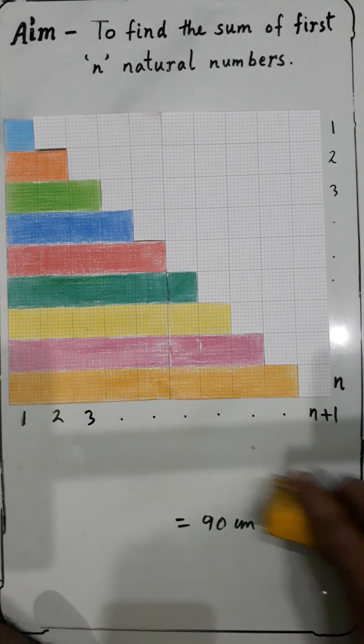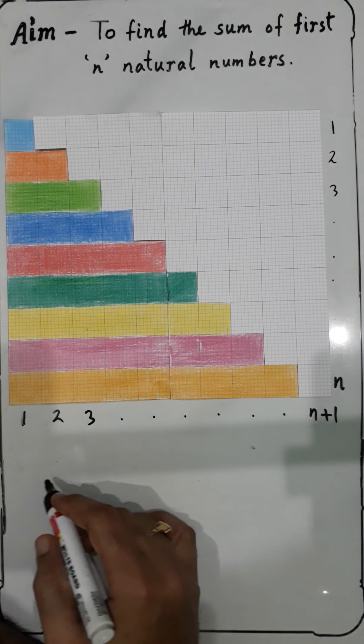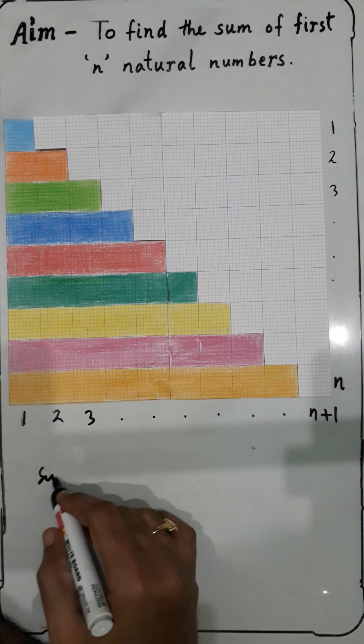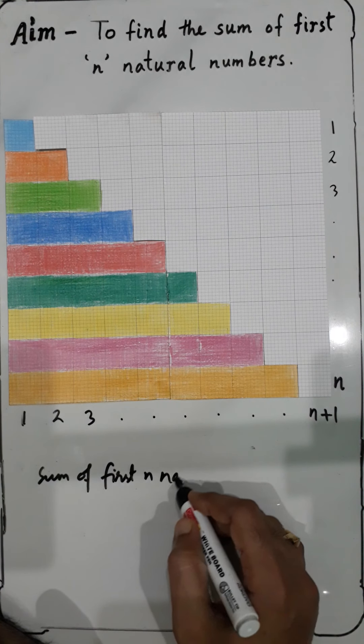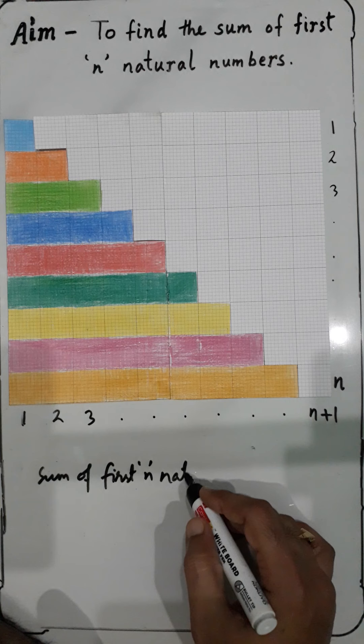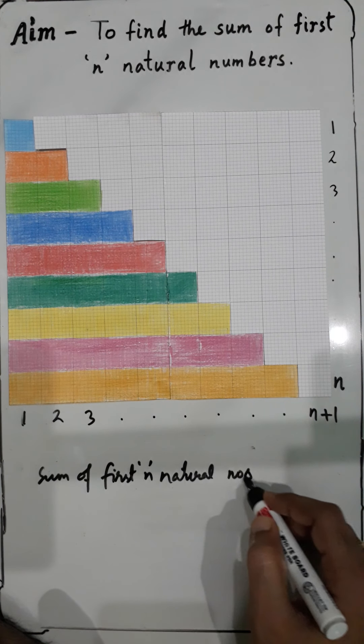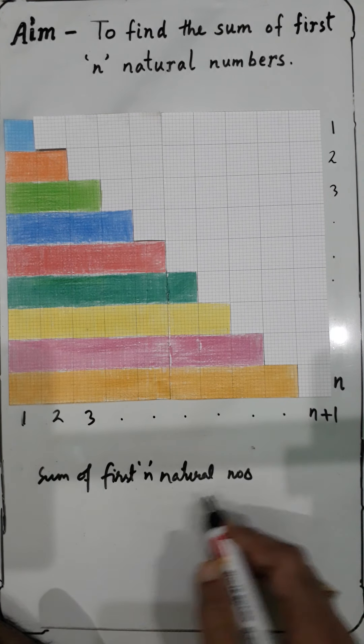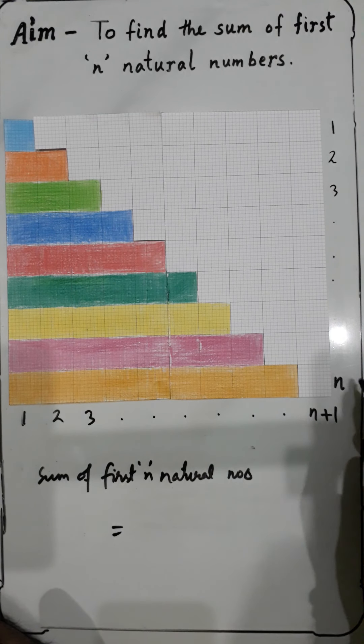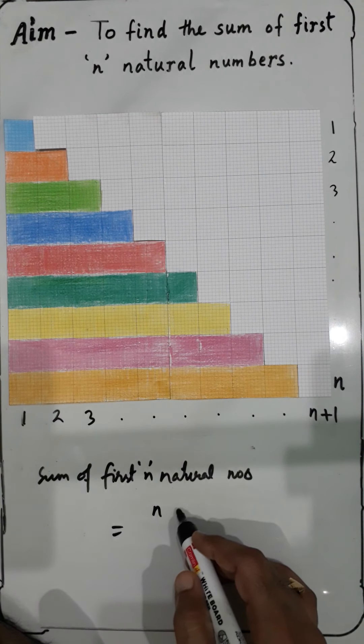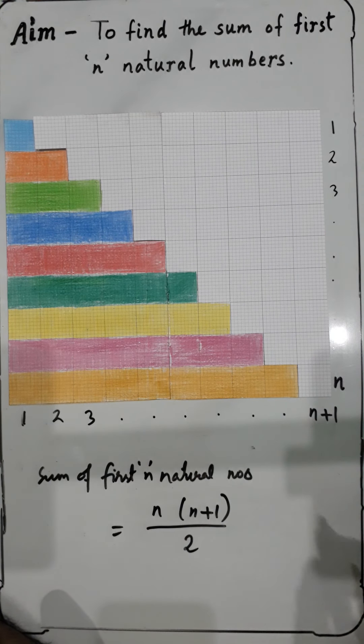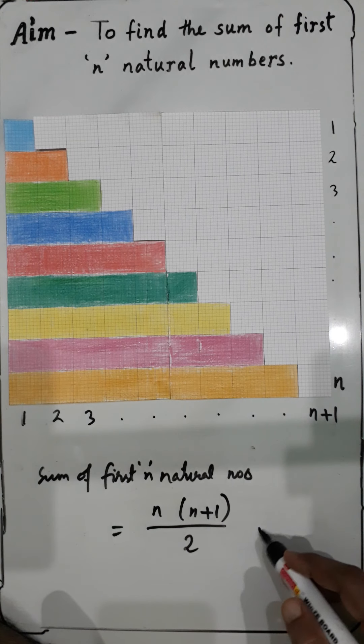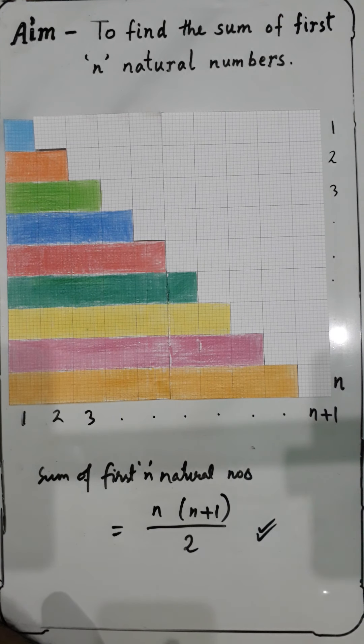We have found that the sum of first n natural numbers is equal to length times breadth, which is n times n plus 1, divided by 2. So this will be the formula to find the sum of first n natural numbers: n(n+1)/2.